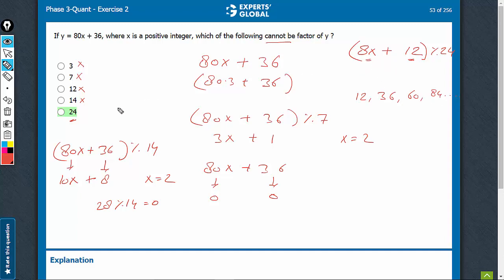And therefore, this is a number that will never be a factor of 80x + 36, where x is a positive integer. E is the right answer. A very good question, this one. There is a lot to be learned from this one.